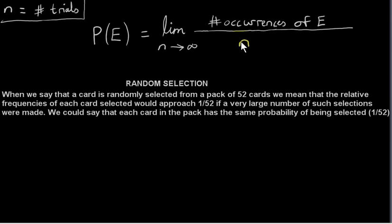In the last video, we looked at the relative frequency of an event, which I'm calling E. The relative frequency of an event is the number of occurrences of the event divided by the number of trials in the experiment.